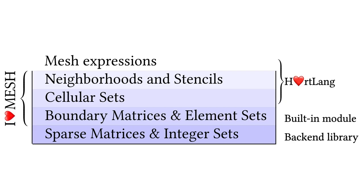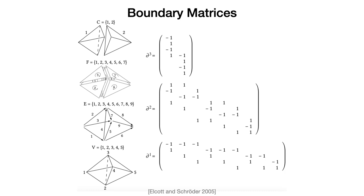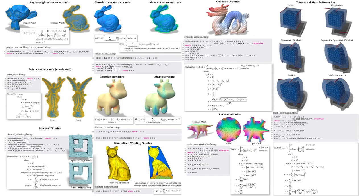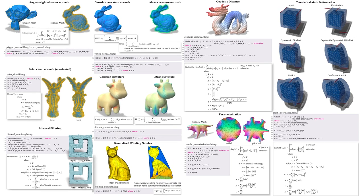The centerpiece of our language is a flexible notation for traversing and manipulating neighborhoods of a cell complex, internally represented via standard operations on sparse boundary matrices. We can rapidly implement various algorithms on point clouds, surface meshes, and volume meshes.